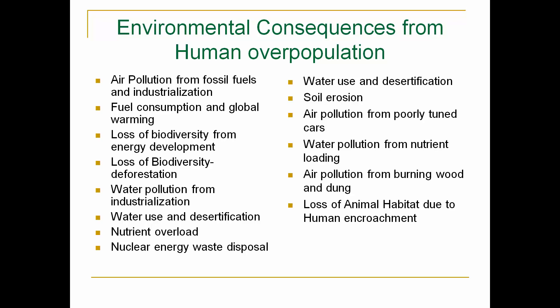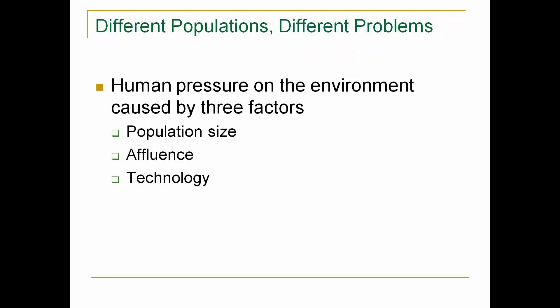Everything we're going to talk about for the rest of the summer — the environmental consequences — is going to be primarily from human overpopulation: air pollution, fuel consumption, global warming, loss of biodiversity, water pollution, desertification, nutrient overloads, nuclear waste, soil erosion, loss of animal habitat — all primarily caused because there's just too many people in the world. Our effects on the world are due to our population size, oftentimes the affluence especially on our continent and Europe, and then technology, which can have both negative and positive effects.